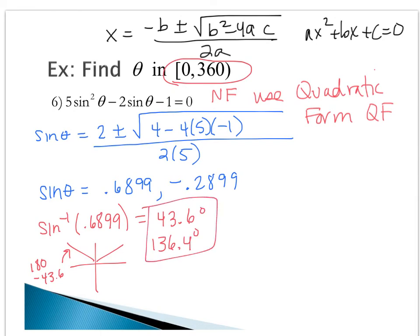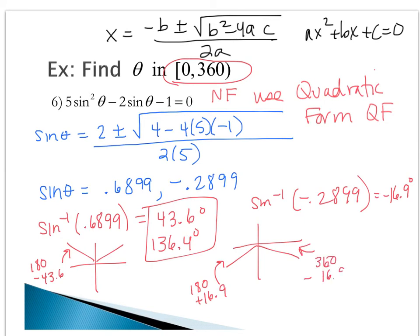If we do sine inverse of negative 0.2899, recall that sine will give us a negative angle because sine inverse returns angles between negative 90 and 90. We get negative 16.9 degrees, but we can't give that as our final answer. Negative 16.9 would be down here in fourth quadrant and also over here in third quadrant. For the one in third quadrant, we do 180 plus 16.9. For the one in fourth quadrant, we do 360 minus 16.9. Our final answers are 343.1 degrees and 196.9 degrees.